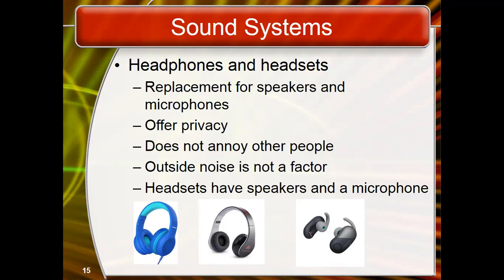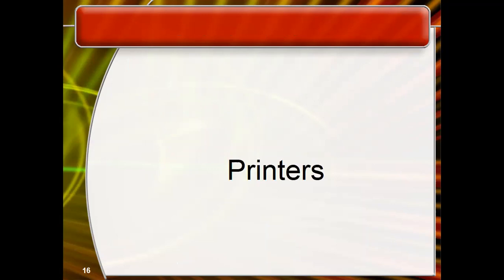All of those were soft copy outputs — we cannot touch them but can see, feel, or hear them. Now we discuss hard copy outputs. The printer is an important type of hard copy output. There are different types of printers including 3D printers, inkjet printers, laser printers, thermal printers, and more. There are also two types of printers: impact printers and non-impact printers.